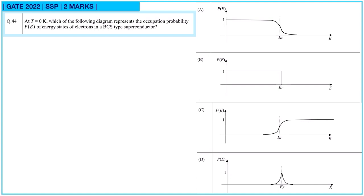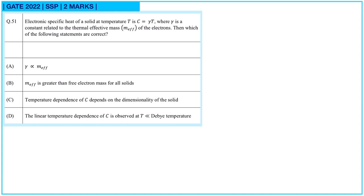Next question: at 0 Kelvin, which diagram represents the occupation probability P(E) of energy states of electrons in a BCS-type superconductor? At the Fermi energy E_F, for temperature greater than 0 Kelvin, the occupancy is one-half and beyond that the variation follows a smooth curve — so option A is correct. Option B corresponds to the case when temperature is 0 Kelvin.